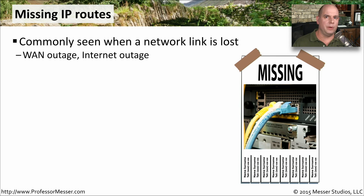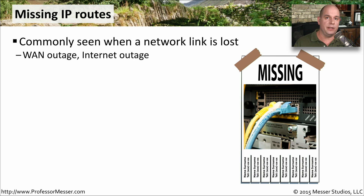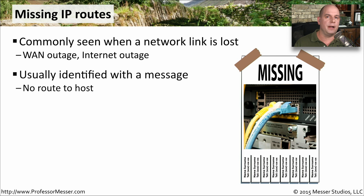If you look at your routing table and notice that a route you expected is missing, you're going to have problems communicating to that particular subnet. We often see this when a link is missing or you lose a connection to your network and have an outage — you can no longer communicate to that subnet. This is usually identified with a message at the command line when you try pinging: your operating system will tell you there's no route to get to that host, and we can't even tell you if the host is up or down.